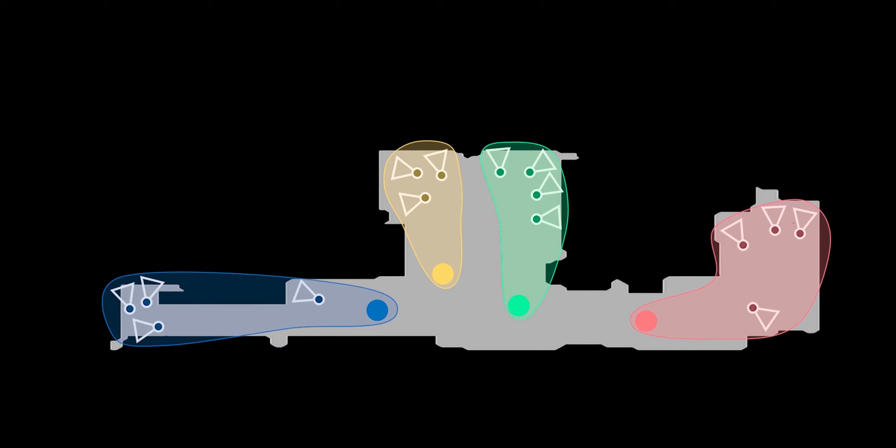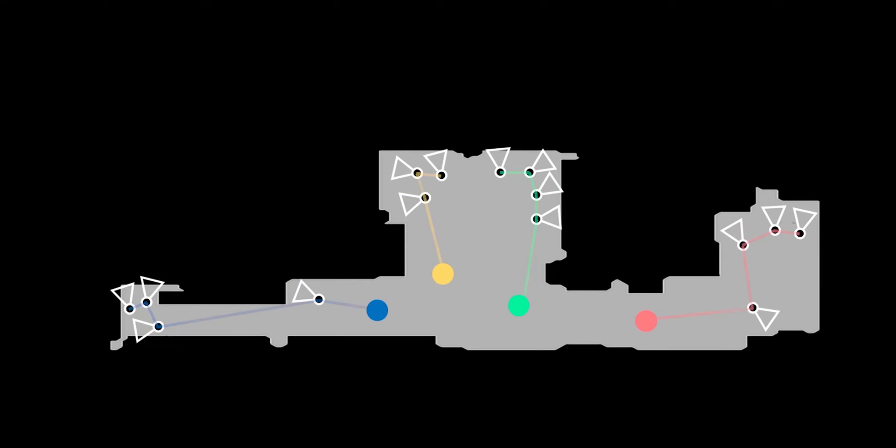We then compute for each robot an optimal traversing path over its assigned tasks. This is achieved by solving a traveling salesman problem, where each task view is visited by the robot exactly once.